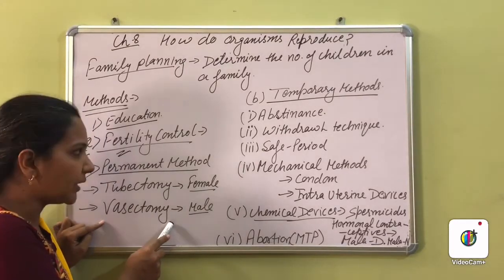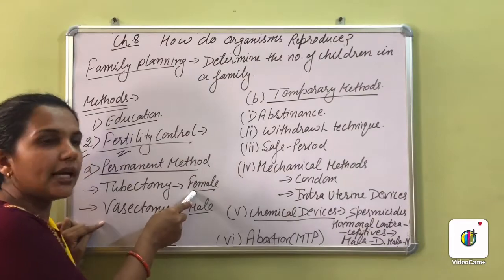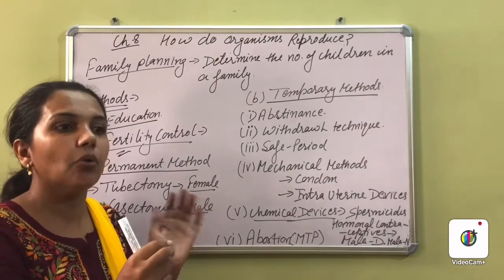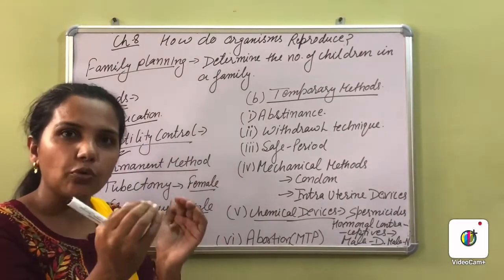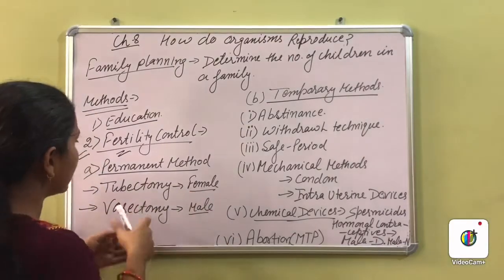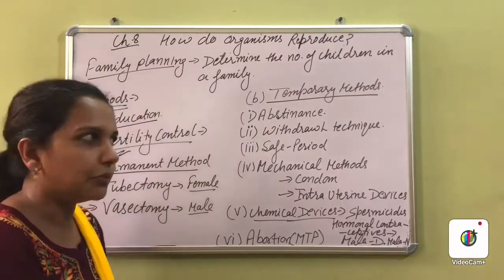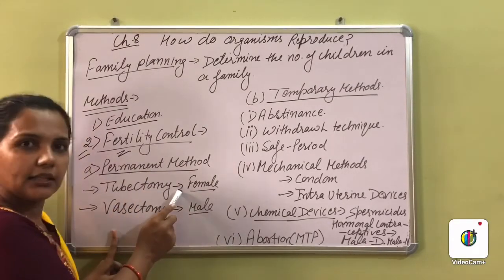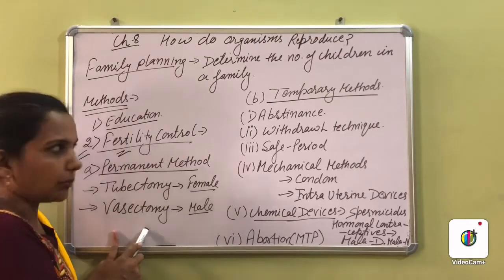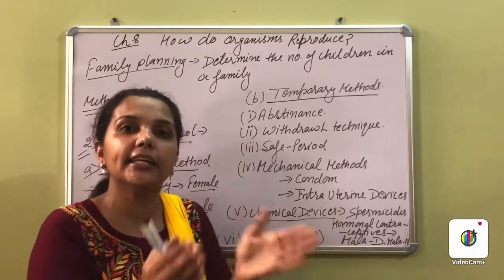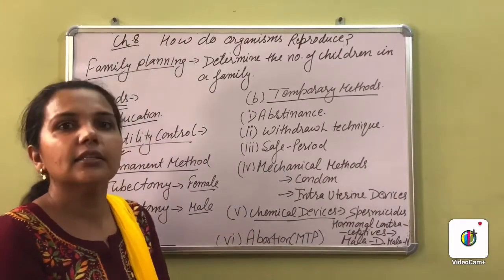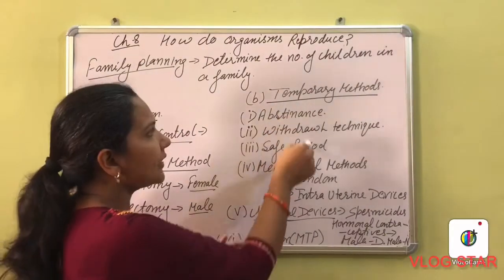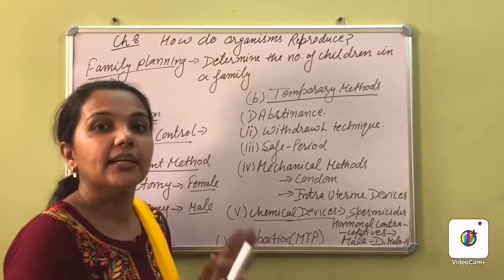In the case of the female, the fallopian tubes are cut and tied so that the ovum and sperm cannot fertilize each other. If fertilization does not occur, pregnancy will not happen. To avoid pregnancy permanently, this method for females is called tubectomy, and for males it is called vasectomy. If we want an age gap between pregnancies, there are some temporary methods.